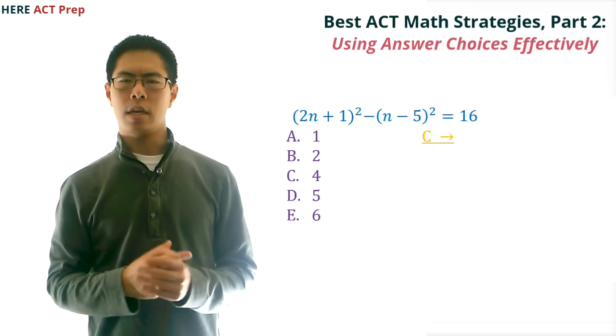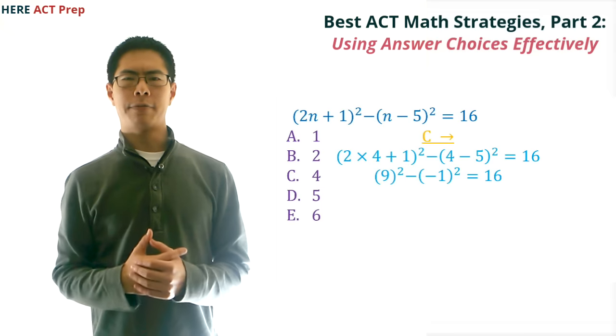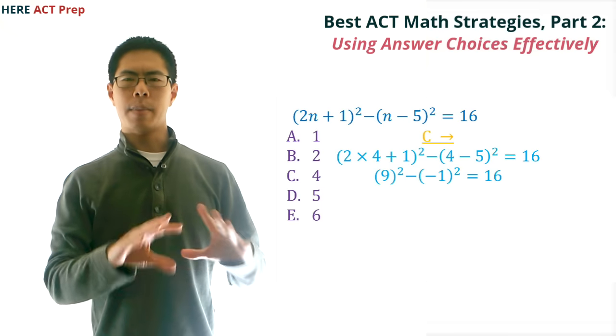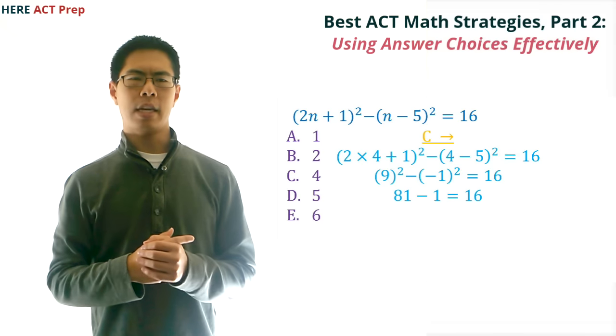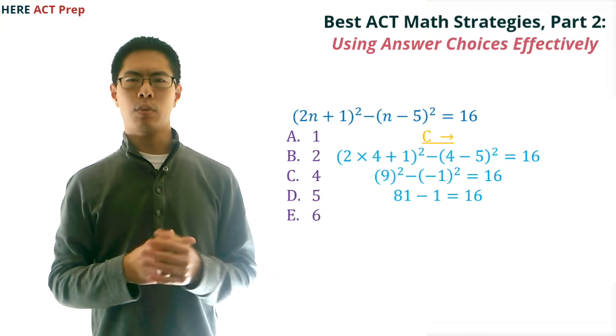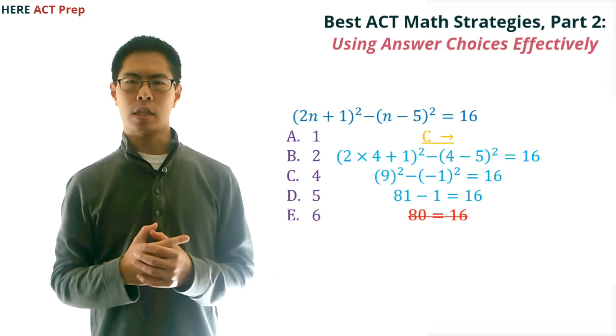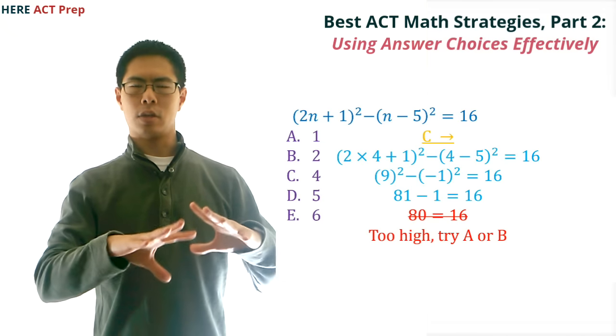So let's start by trying choice C, which is 4. When we plug 4 in, we end up getting 9² - (-1)² = 16, which simplifies to 81 - 1 = 16, which is 80 = 16, which doesn't work. We see that 80 is too big, so let's try one of the smaller choices.